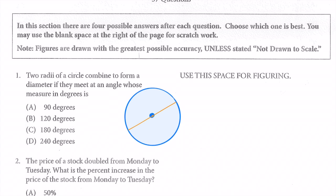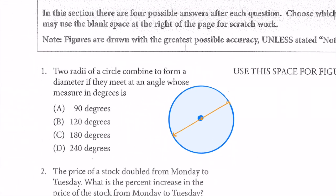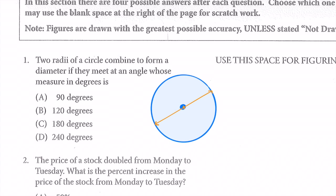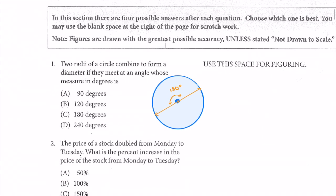It's formed by two radii. We know that, and we're trying to figure out what the angle is. It's a straight line, and that means this angle is 180 degrees. So we have that answer here, and that means we have our answer — it's 180.